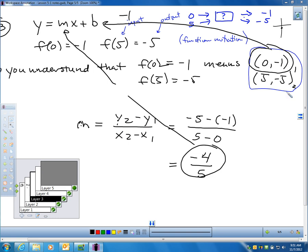So, I have to do y sub 2 minus y sub 1, which is negative 5 minus negative 1 in the numerator and 5 minus 0 in the denominator. And I get negative 4, I meant to say, over 5. Again, you may use your calculator on this stuff. This is all calculator material.